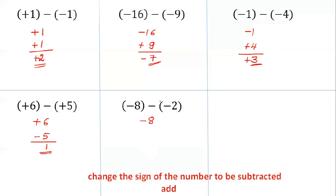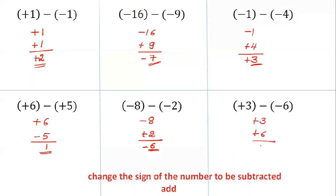Minus 8 minus minus 2: change the sign of minus 2 to plus 2. The signs are now different, so subtract. Put the sign of the bigger number. Next: plus 3, change the sign of minus 6 to plus 6. Plus 3 plus 6 is 9. Answer: plus 9.